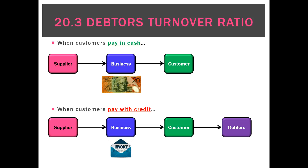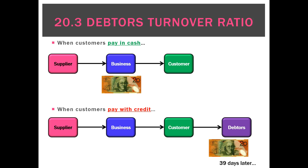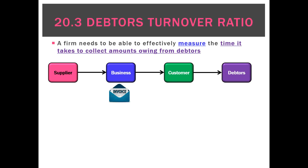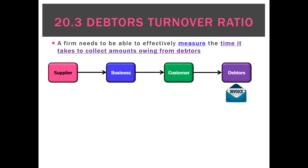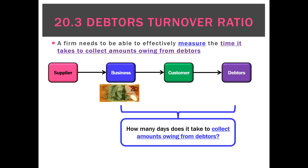Once we issue a debtor an invoice, there's going to be a lag between when they receive it and when they pay us. That could be seven days for one debtor, 17 for another, 39 for another, 52 for another. What we'd like to know is, on average, how long does it take from sending the invoice to the customer receiving the money back? The ratio we use for that is called the debtors turnover ratio.